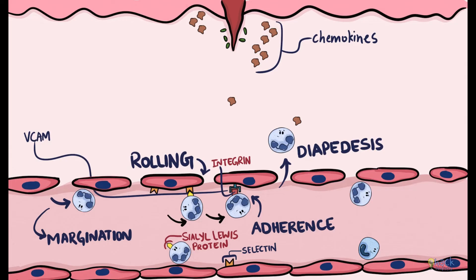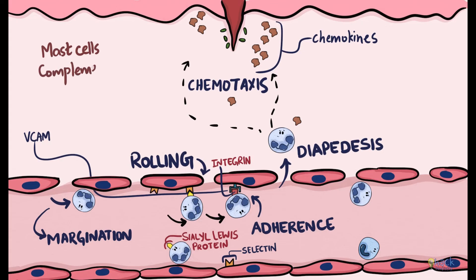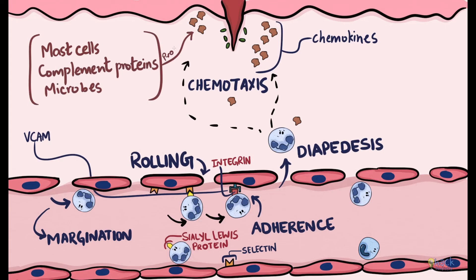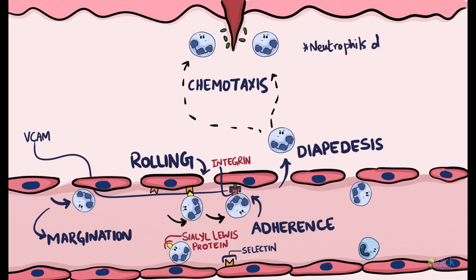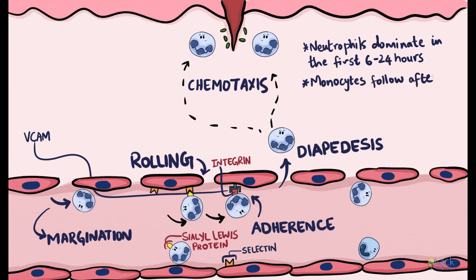Once in the extravascular space, leukocytes migrate towards the site of infection along a concentration gradient, a process called chemotaxis. Chemotaxis is induced by chemokines produced by mast cells, complement proteins and the microbes themselves — examples include interleukin-8, leukotriene B4 and complement protein C5a. Neutrophils predominate at the site of infection for the first 6 to 24 hours, followed by monocytes getting into action post 24 to 48 hours. After recruitment, leukocytes recognize microbes or dead cells and kill them by a process called phagocytosis.